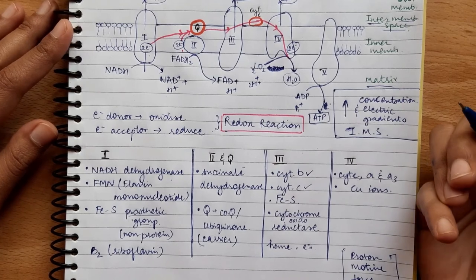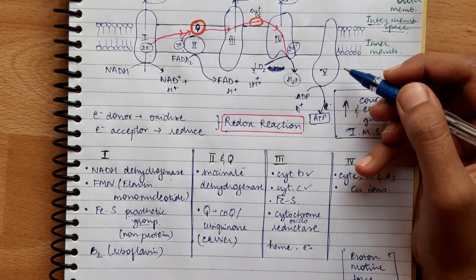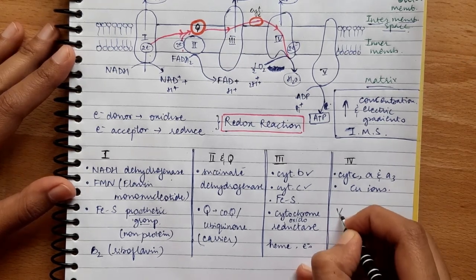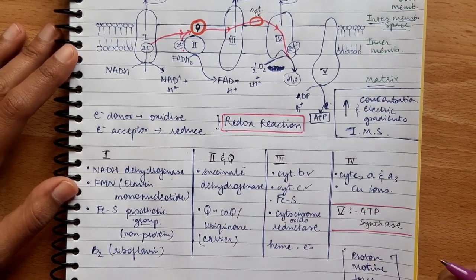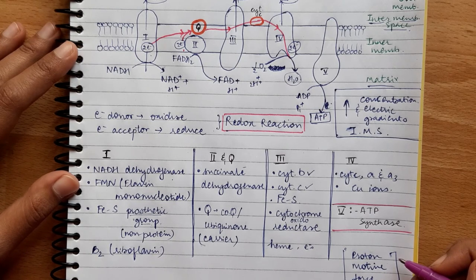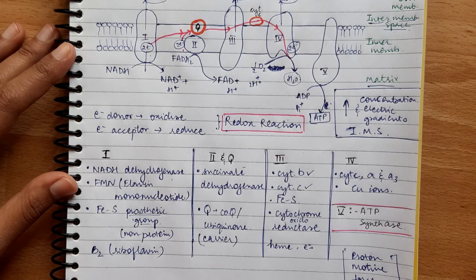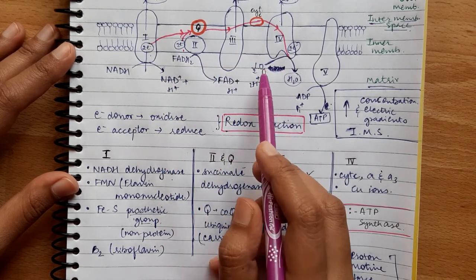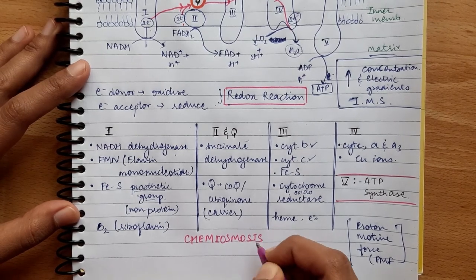ADP plus inorganic phosphate gives ATP. The H⁺ ions accumulate in the inter-membrane space, but ions cannot simply diffuse back through the membrane. So here is our fifth complex, which we call ATP synthase, because ATP is forming from ADP through this complex. ATP synthase brings the H⁺ ions back from the inter-membrane space to the matrix, and from that energy ADP is converted to ATP. This whole process — electrons moving through the chain driving proton pumping and ATP synthesis — is called chemiosmosis.